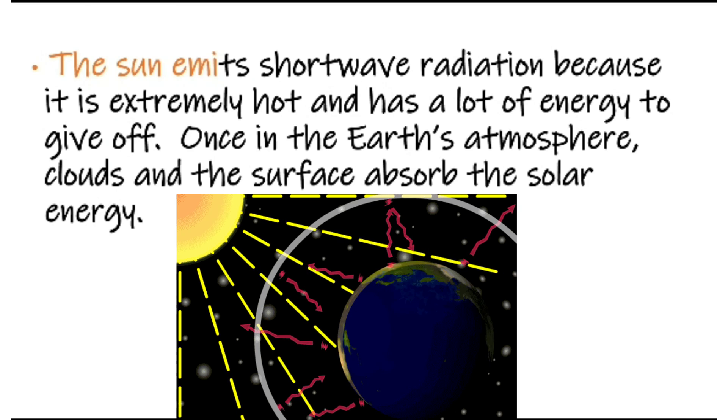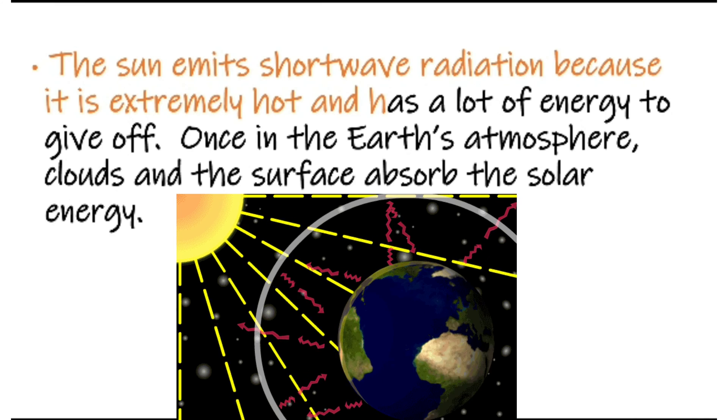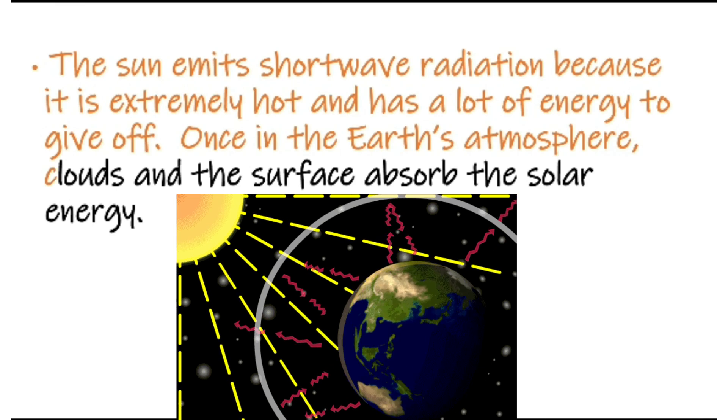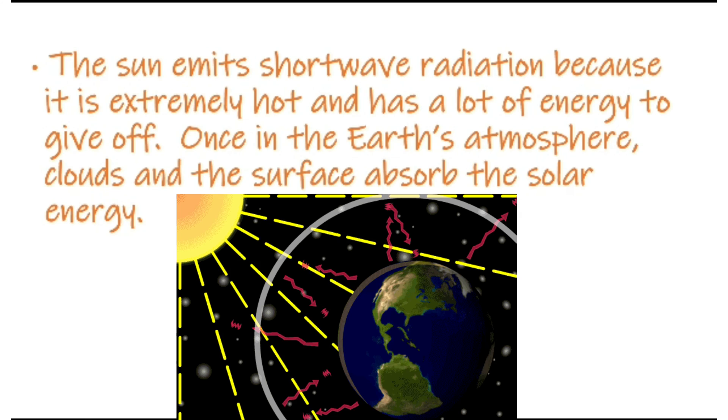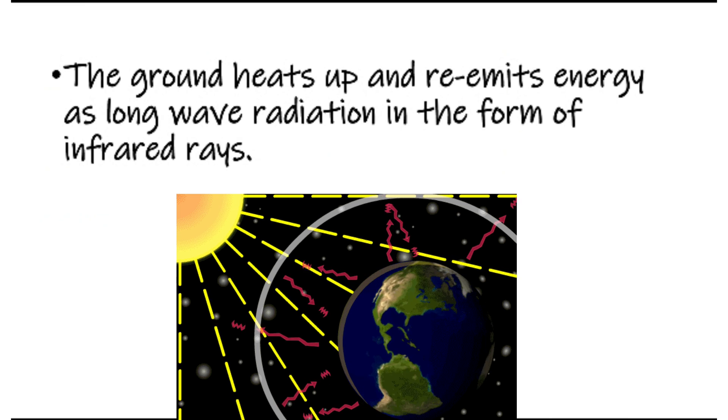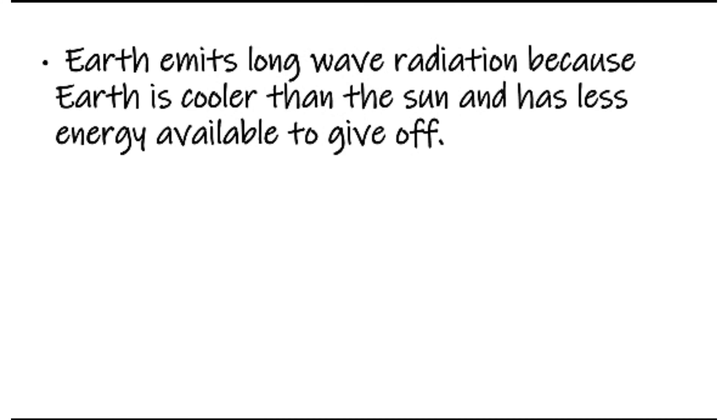The sun emits short wave radiation because it is extremely hot and has a lot of energy to give off. Once in the earth's atmosphere, clouds and the surface absorb the solar energy. The ground heats up and re-emits energy as long wave radiation in the form of infrared. Earth emits long wave radiation because earth is cooler than the sun and has less energy available to give off. This is called the greenhouse effect.